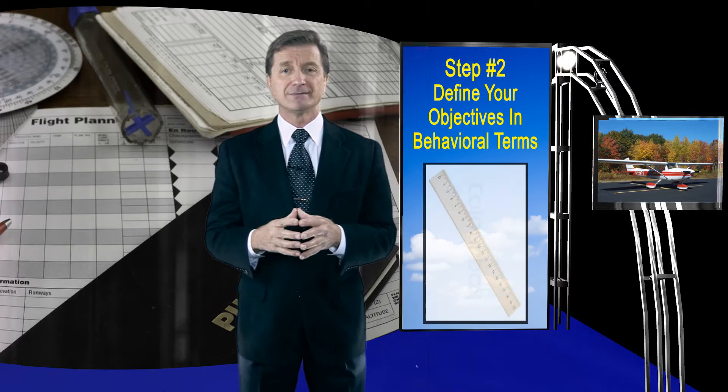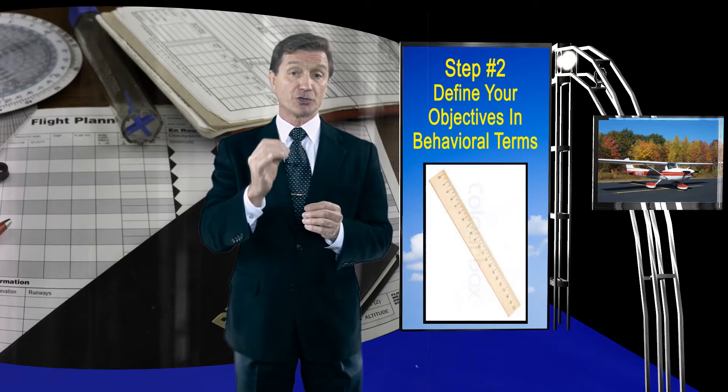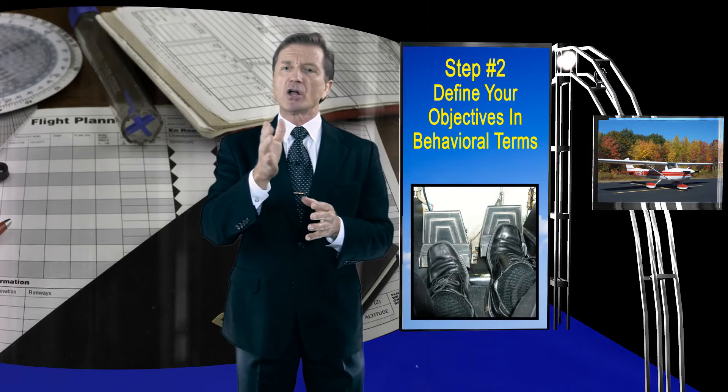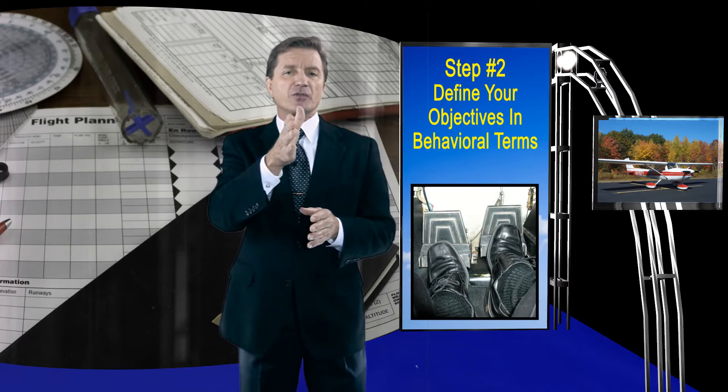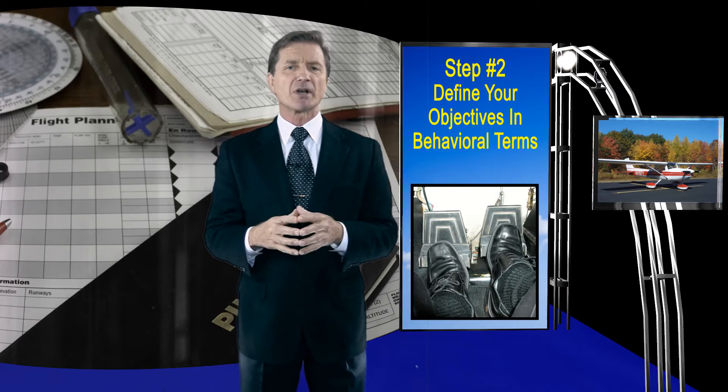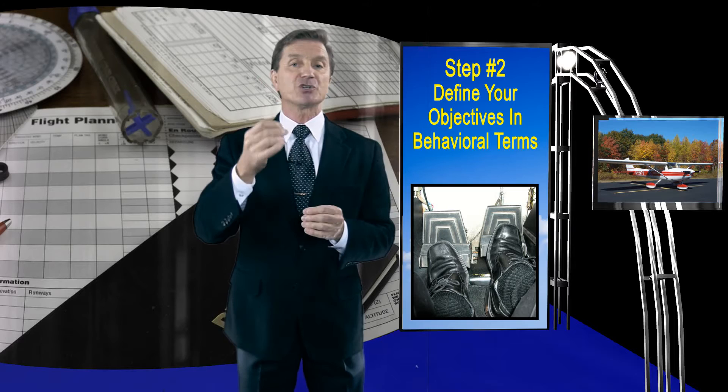More than what? How much more? You're better off defining your objectives in behavioral terms such as: 'Bob, to enter a right turn, press the ball of your right foot on the bottom of the right rudder pedal sufficiently to keep the nose from yawing to the left during the turn entry.' Now you've given him a ruler. He understands the specific behavior you want because you've spoken directly to the action center of his brain.